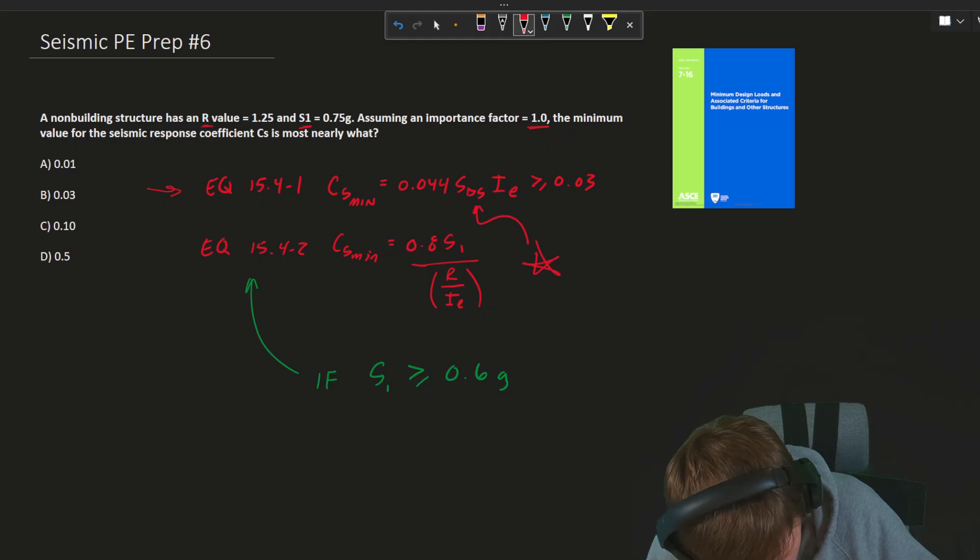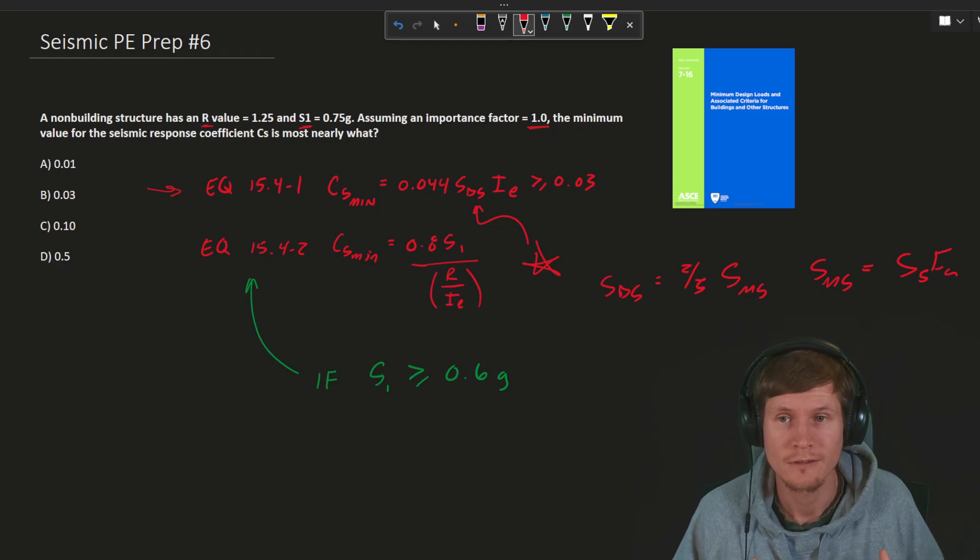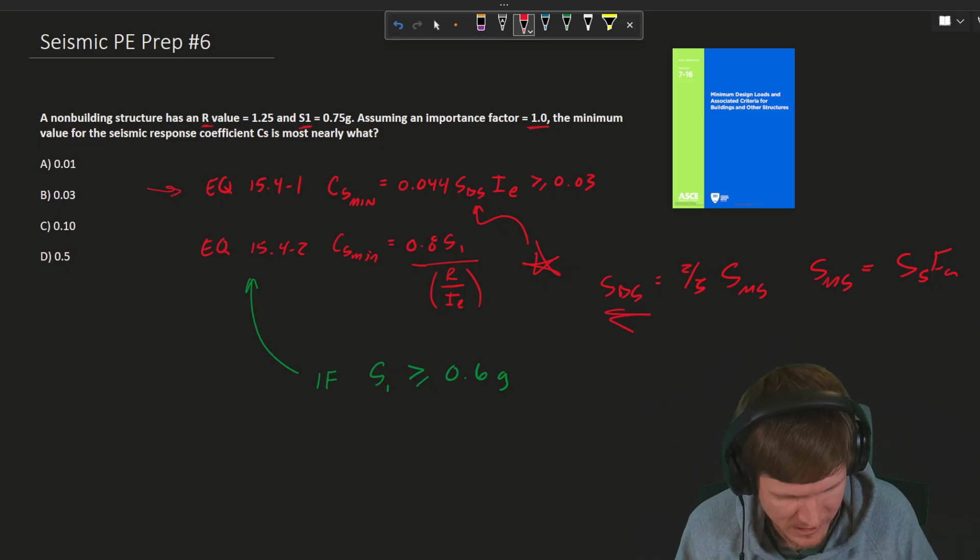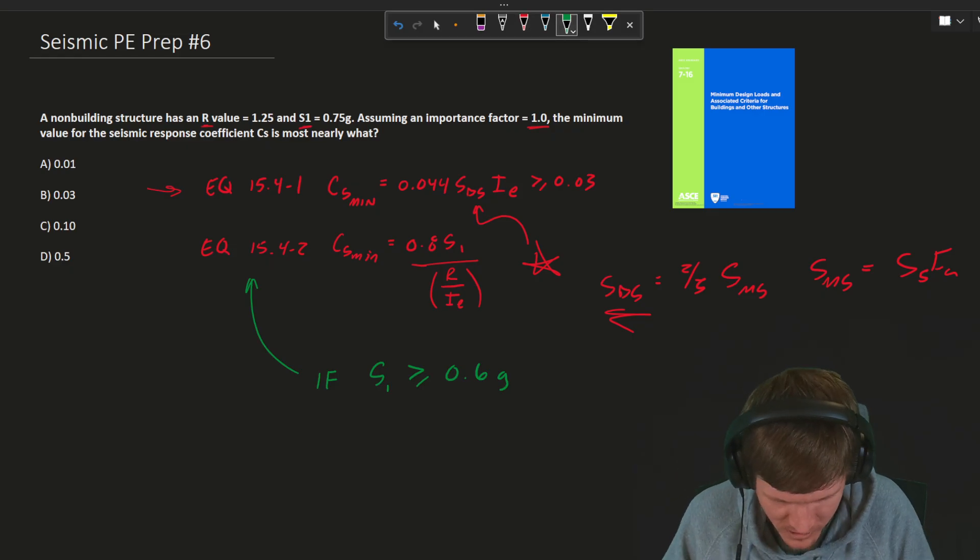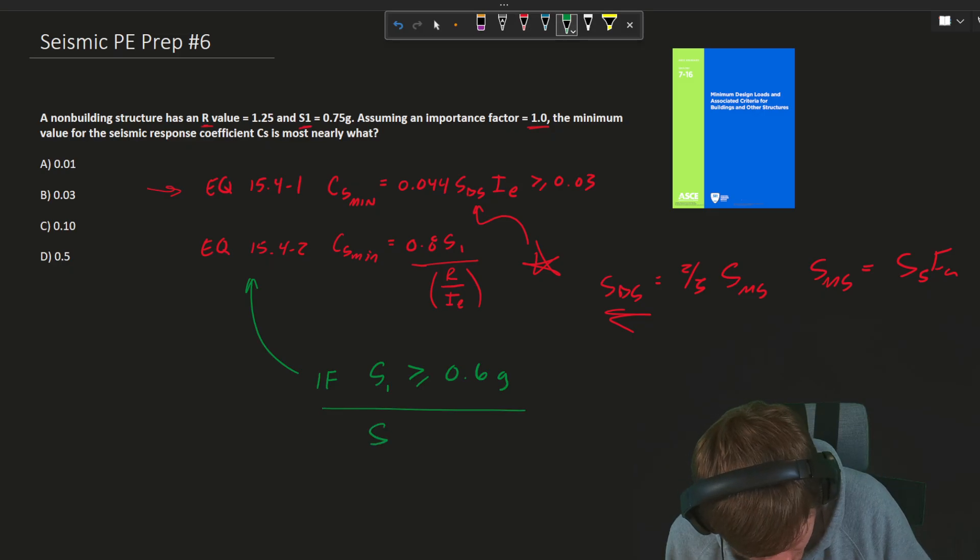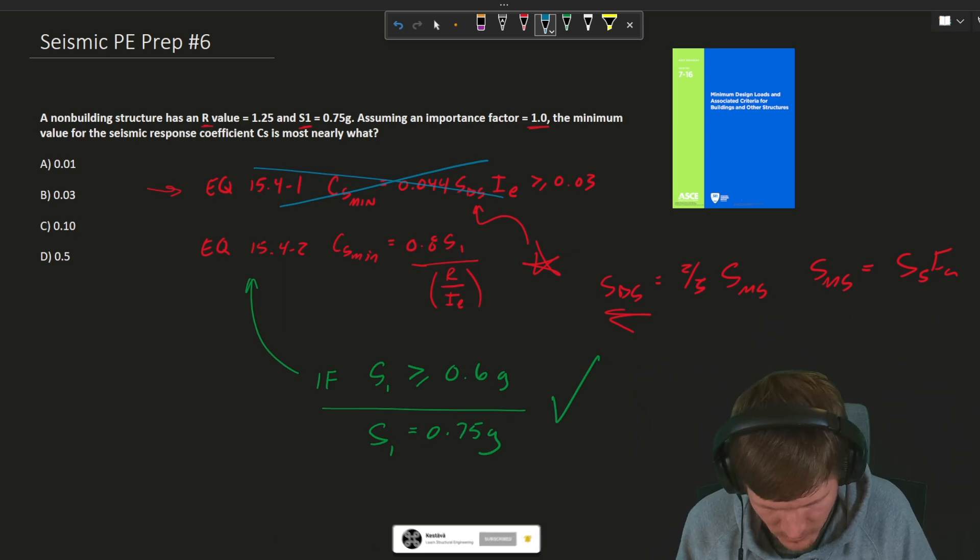So we'll start with equation 15.4-1, and we'll see very quickly we need an SDS, which was not provided to us. If you head back to chapter 11, you'll see SDS is equal to two thirds SMS, and SMS is you need, I think, equal to S sub S times F sub A, I believe it's something like that. So you need a lot of additional criteria that you would need to assume that you can't get from what they provided to you. So there's no clear way to go about finding SDS. So you're stuck with that equation. You can't solve that equation. It's not applicable to me. I need to move on.